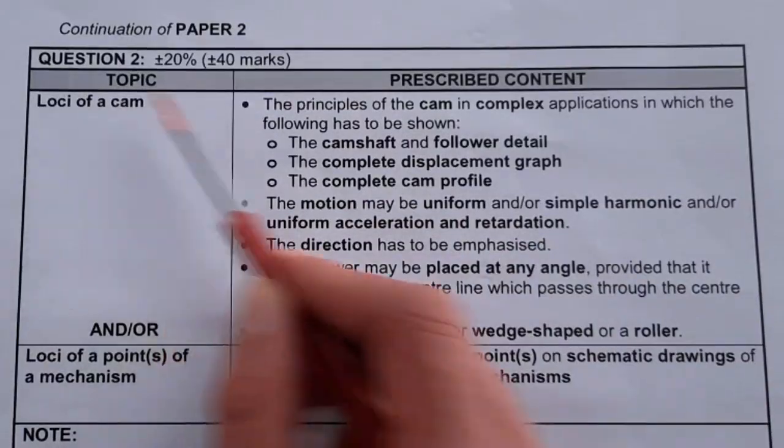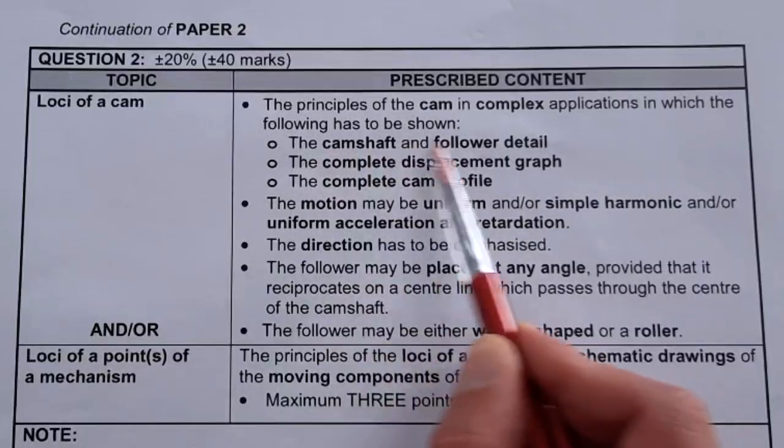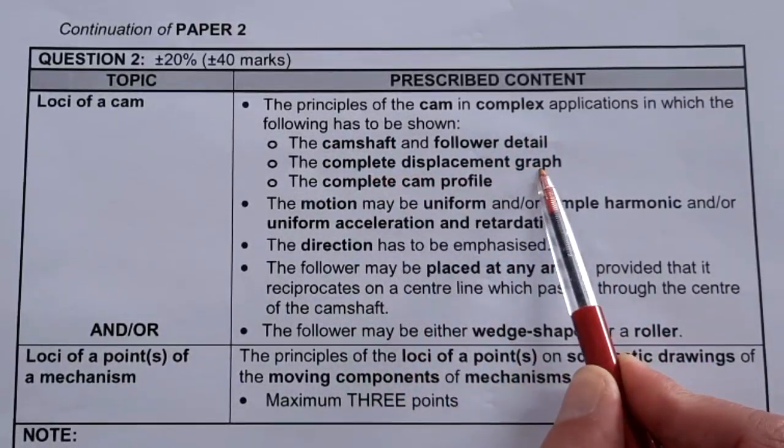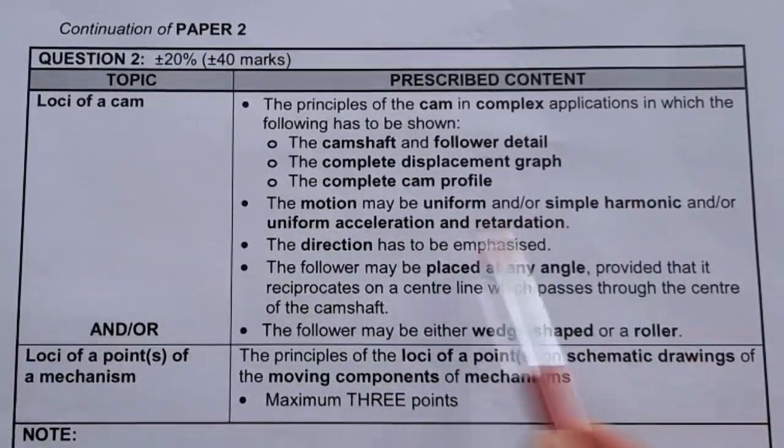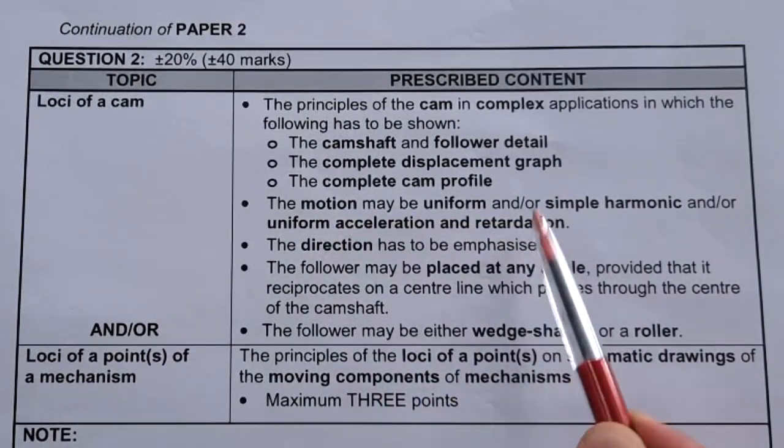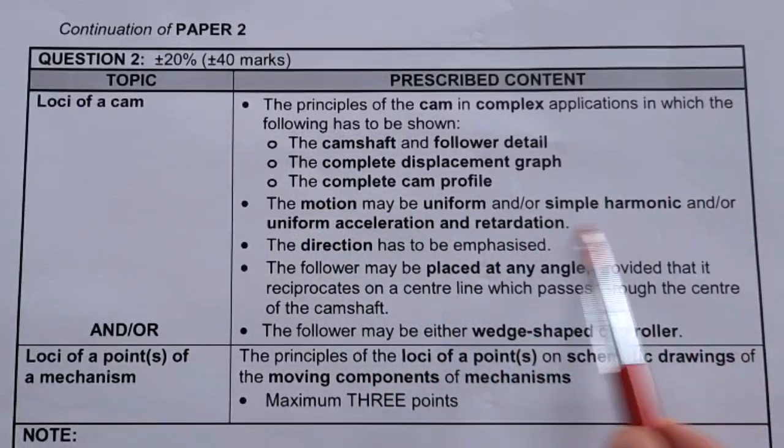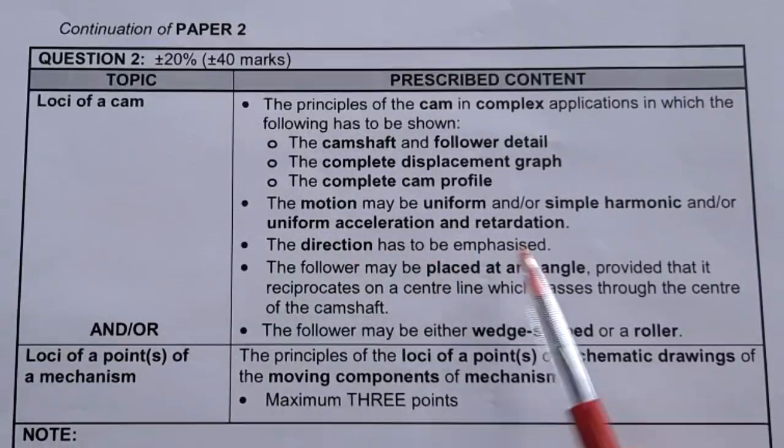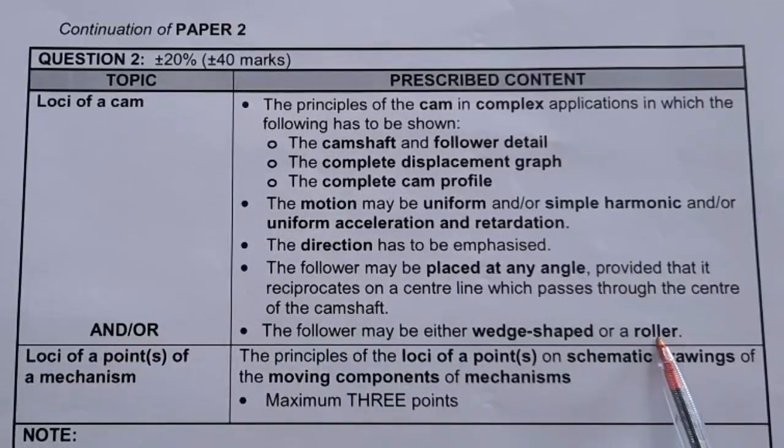First things first, loci of a cam. If they ask that, they can ask you the principles of a cam in complex applications, the camshaft and the follower details. You either have to draw the camshaft and the follower, complete displacement graph, and be able to draw the complete cam profile. The motion can be uniform, simple harmonic, uniform acceleration and retardation. I've made a video in the How to EGD list of videos that discusses these, so I won't do this in this video but make sure you watch that. Then the direction has to be emphasized. The follower may be placed at any angle and the follower may be wedge-shaped or a roller.